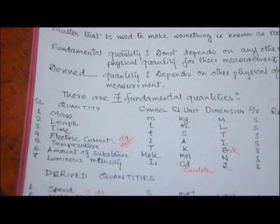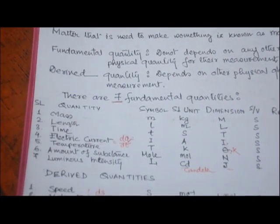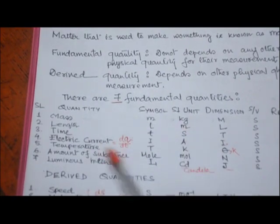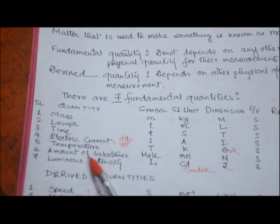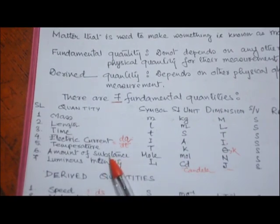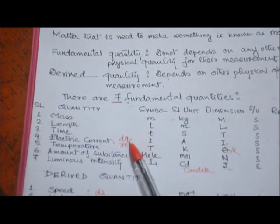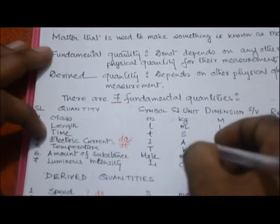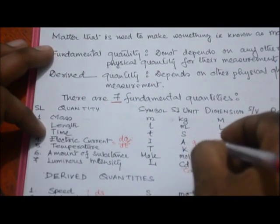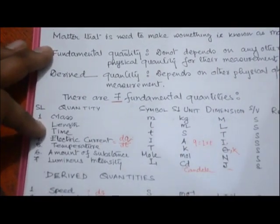To recap, the seven fundamental quantities and their SI units: mass (kg), length (meter), time (second), electric current (ampere), temperature (kelvin), amount of substance (mole), and luminous intensity (candela). Once again, electric current is the fundamental quantity, not the charge. Charge q equals i times t, and its unit is coulomb.